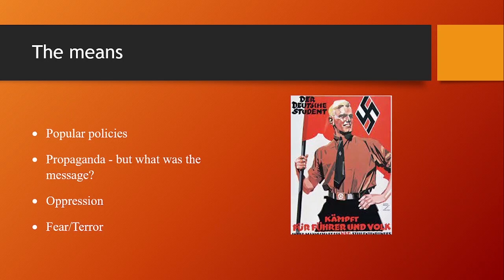Many Germans who hadn't voted for the Nazis, but whose lives had been improved, accepted the regime. They were prepared to tolerate the loss of political freedom and ignore the terror so long as it didn't affect them — in return for work, foreign policy success, and a strong government. Make a note of some of the things the Nazis did to benefit different groups so that you have some examples. It makes it seem as if propaganda would hardly be needed, but it was — the Nazis certainly thought so.